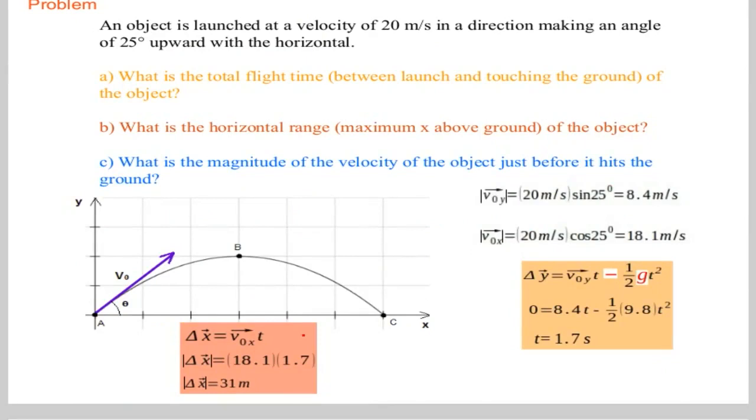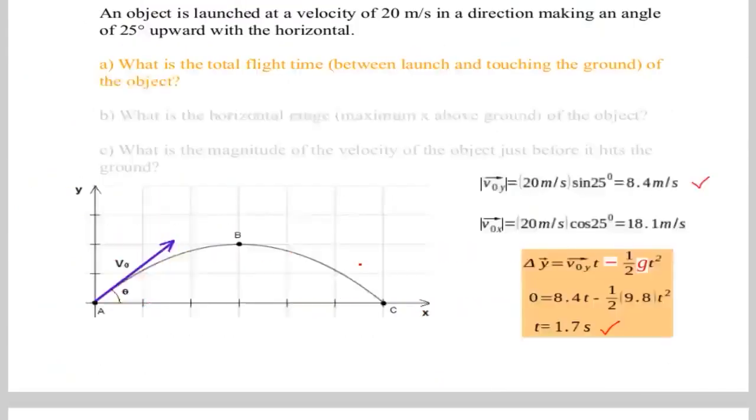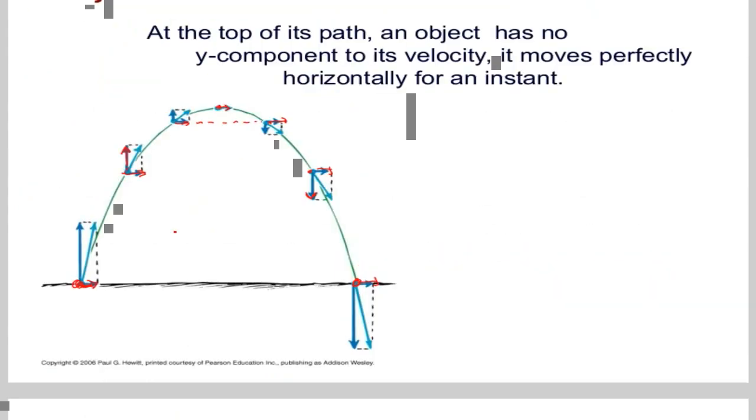Third part says what's the magnitude of the velocity of the object just before it hits the ground. Now recall the definitions that we discussed earlier. The horizontal component did not change, so we already know that it's already calculated so we can write the value of this horizontal component in the problem. And the vertical component, the magnitude of the velocity component is also not changing when it hits the ground.